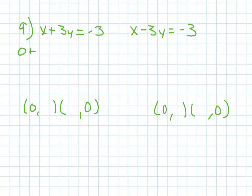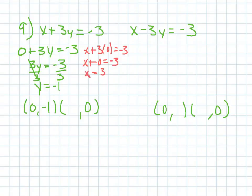And I'm going to solve. So, if I plug in 0 for x in this first one, 0 plus 3y is 3y. And then I divide by 3 to get negative 1. So, when x is 0, y is negative 1. When I plug in 0 for y, 0 times 3 is 0. And 0 plus x is x. So, I get negative 3.